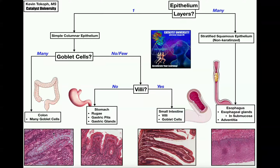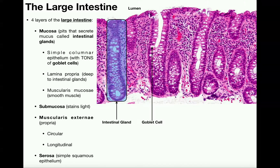The colon is easy to identify because the giveaway is many, many goblet cells. You're going to see so many goblet cells when you look at the large intestine. If you see a lot of goblet cells, you have the large intestine or the colon.